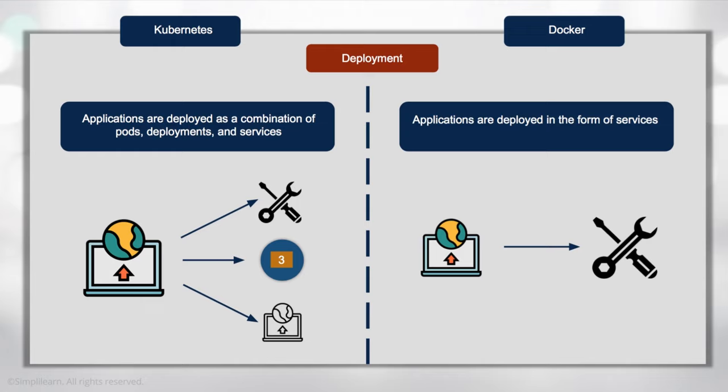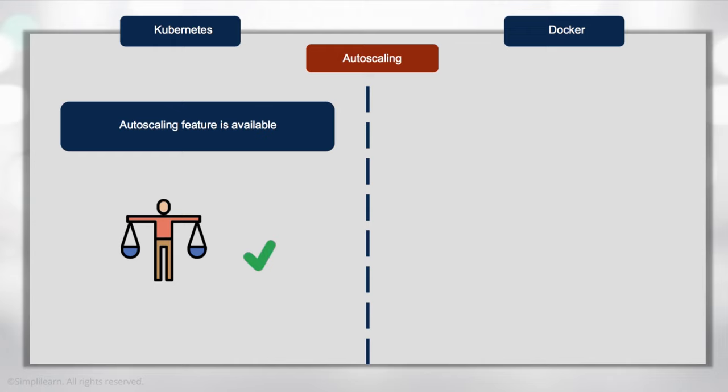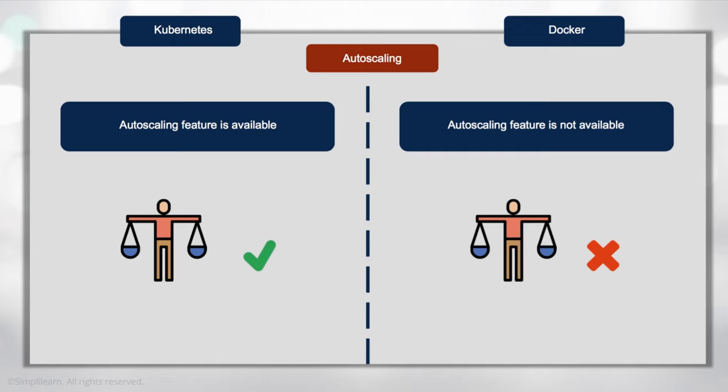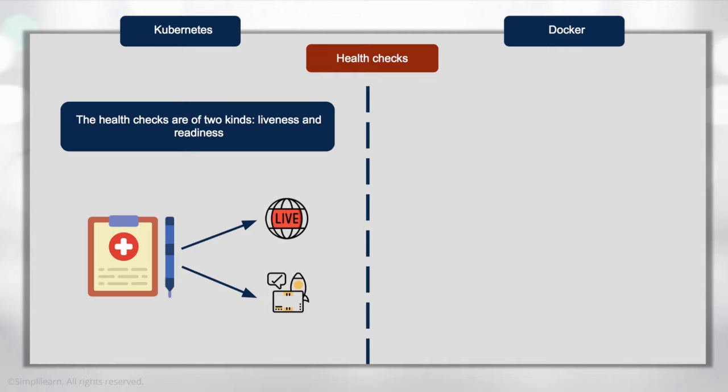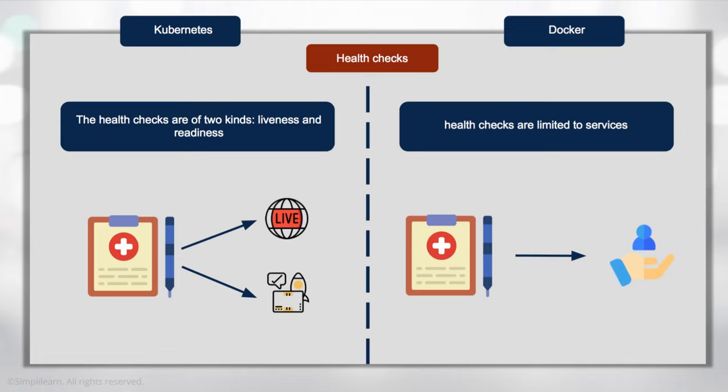Kubernetes is by default an auto-scaling solution — it's always on and available — whereas Docker does not include auto-scaling, which makes sense because Docker is a tool for building solutions while Kubernetes is about managing infrastructure. Kubernetes also runs health checks on the liveness and readiness of your entire environment, from one container to tens of thousands, whereas Docker limits health checks to the services within its own containers.